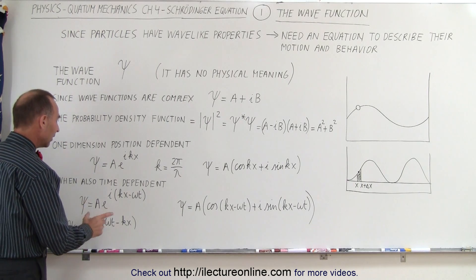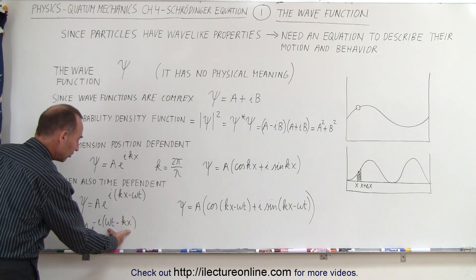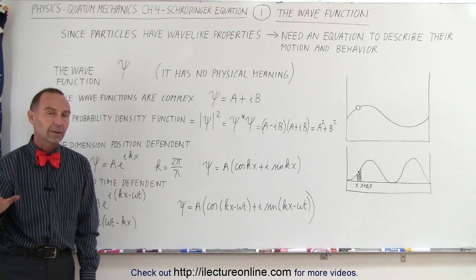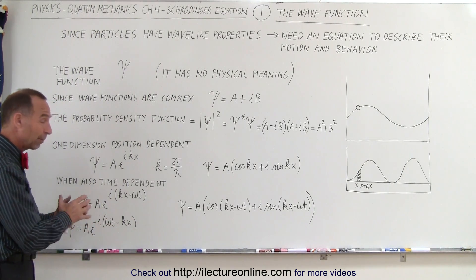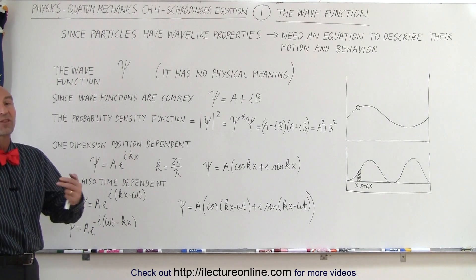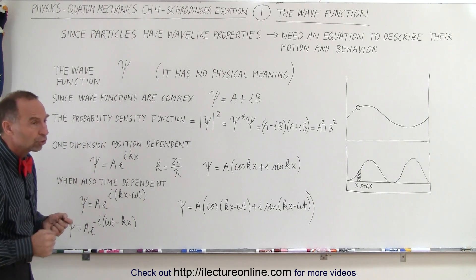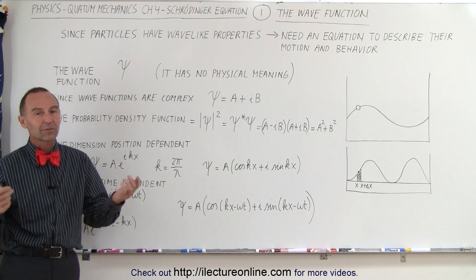Also notice that quite often, instead of writing this as the wave function, they pull out a negative sign, switch these two around, and express it like this. Later on, it will come quite clear why we do that, because it makes it easier then to represent the wave function in terms of energy and momentum, which are the quantities that we use to describe motion and behavior of small quantized particles like electrons and protons.